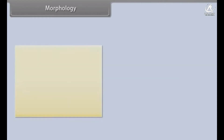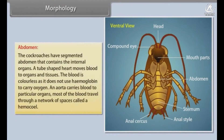Morphology. Abdomen. The cockroaches have a segmented abdomen that contains the internal organs. A tube-shaped heart moves blood to organs and tissues. The blood is colourless as it does not use haemoglobin to carry oxygen. An aorta carries blood to particular organs. Most of the blood travels through a network of spaces called a haemocoel.